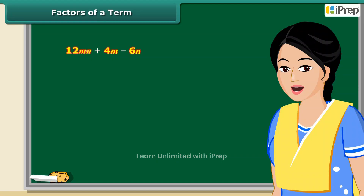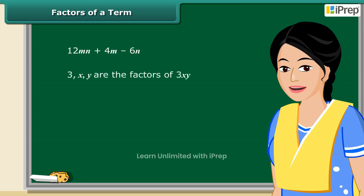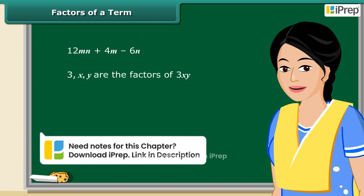A term is a product of its factors, but what are these factors? Look at this term — we say that 3x and y are the factors of the term 3xy. We can also represent 5xy plus 10 by a tree diagram.